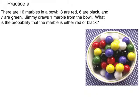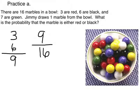What is the probability that the marble is either red or black? Well, let's see. We have 3 red and 6 black for a total of 9 out of 16. So the probability is 9 in 16 that he will get either a red or a black.